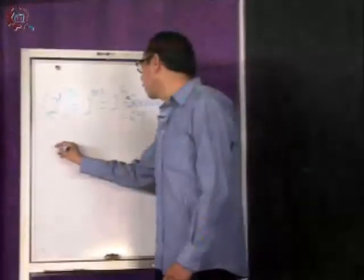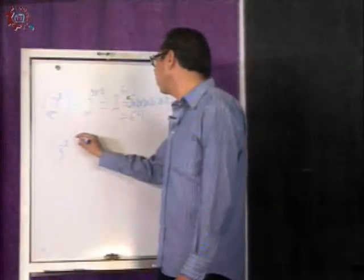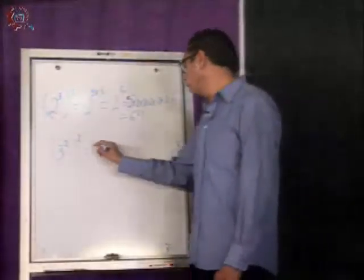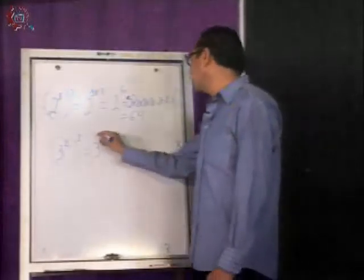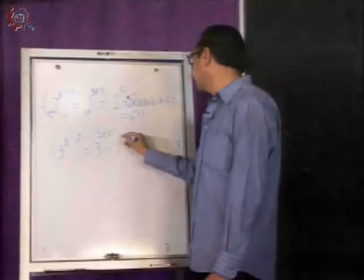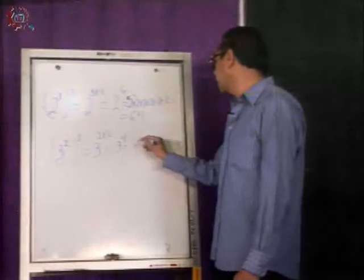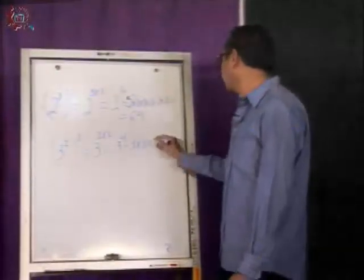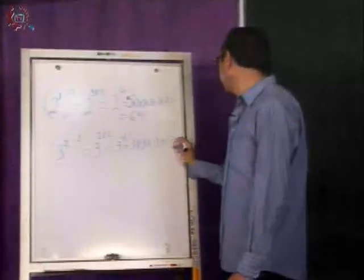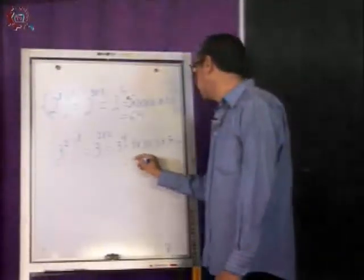Te pongo otro ejemplo: tres elevado a la dos, y a su vez elevado otra vez a la dos. Una potencia elevada a otra potencia. Ponemos la base, que es tres. Hacemos la multiplicación de los exponentes, y me da tres elevada a la cuarta potencia. ¿Y qué es lo que tenemos que hacer? Multiplicar. ¿Cuántas veces? Cuatro veces. Y esto me da tres por tres, nueve, por tres, veintisiete, veintisiete por tres, y me da como resultado ochenta y uno.